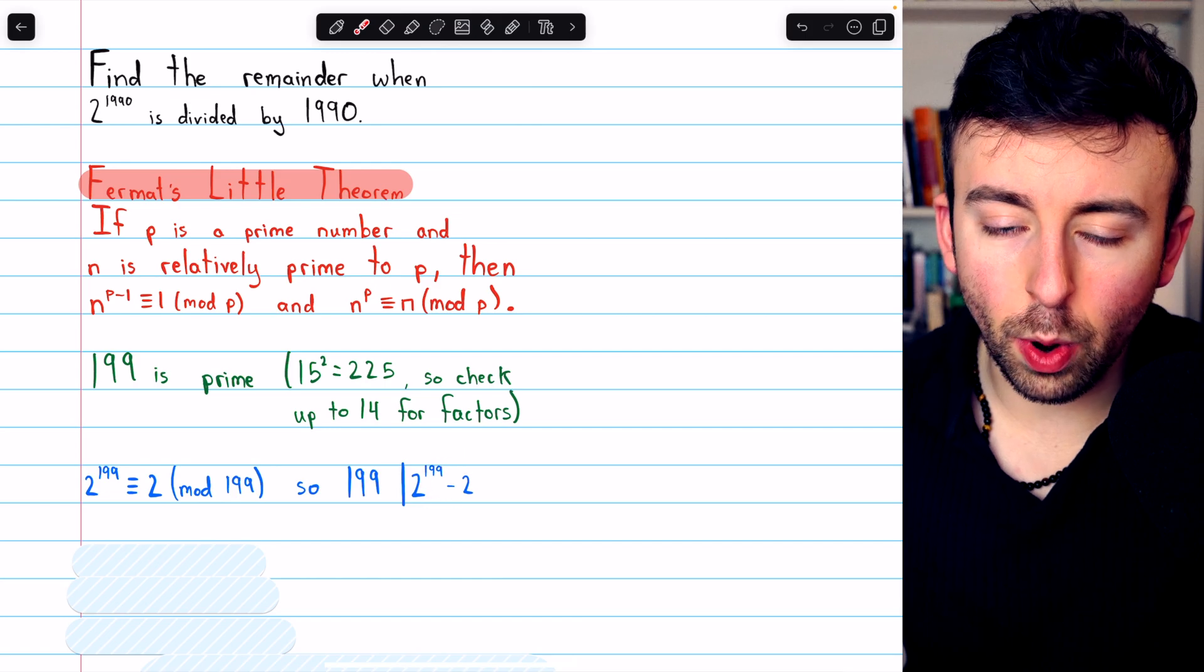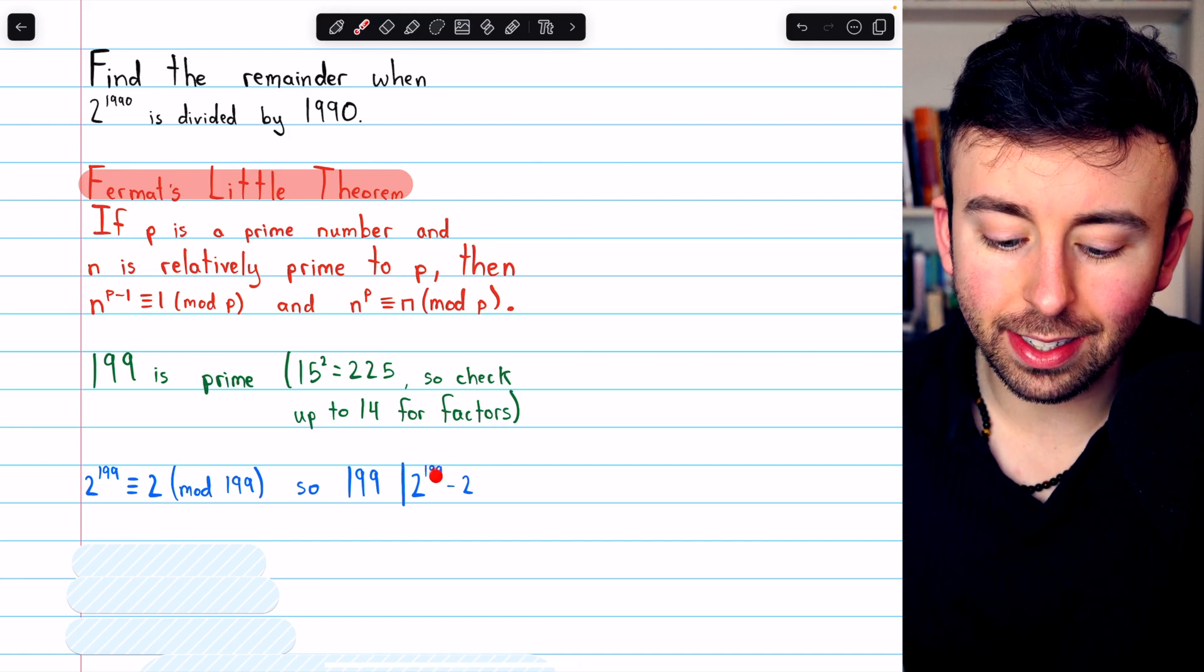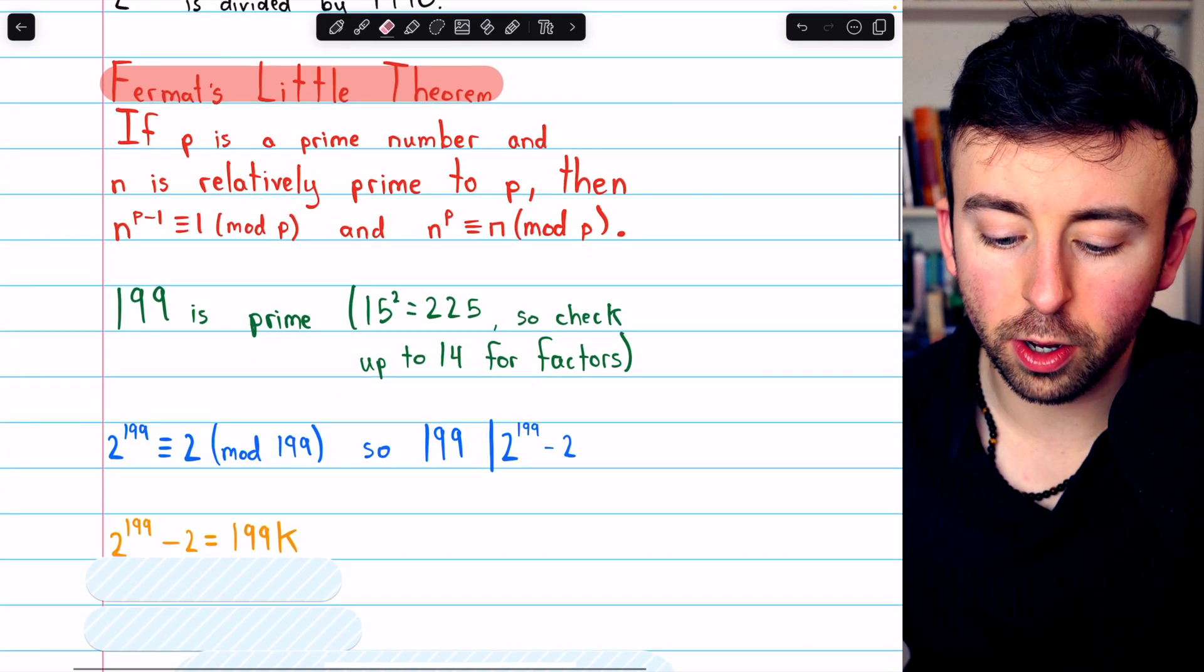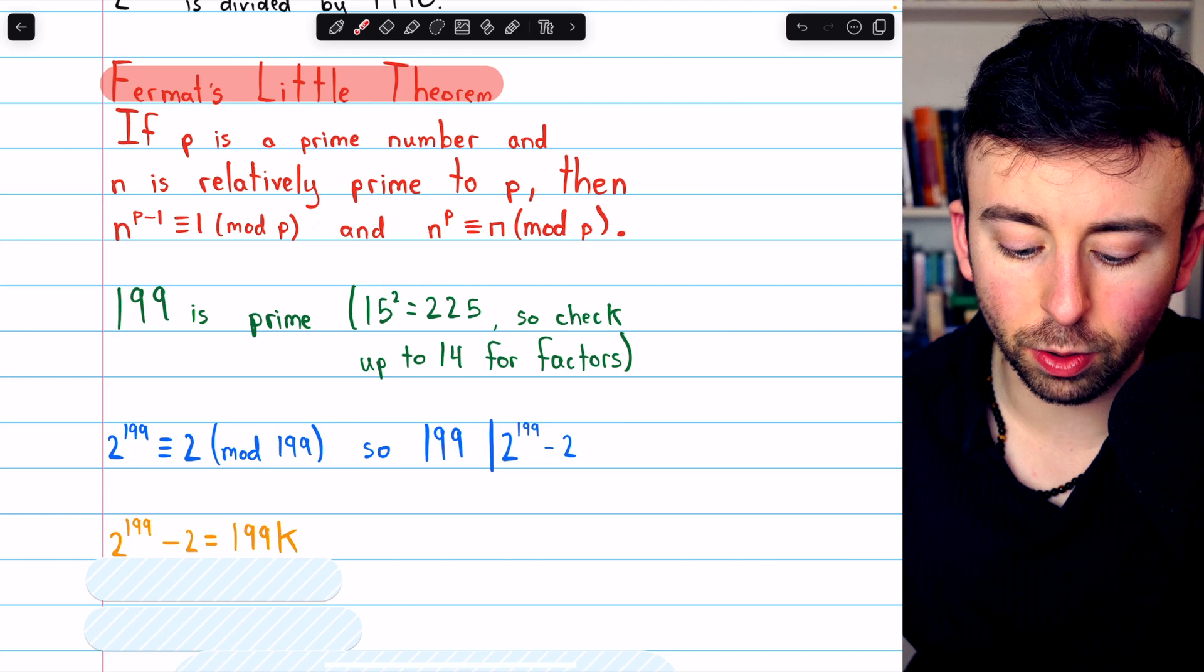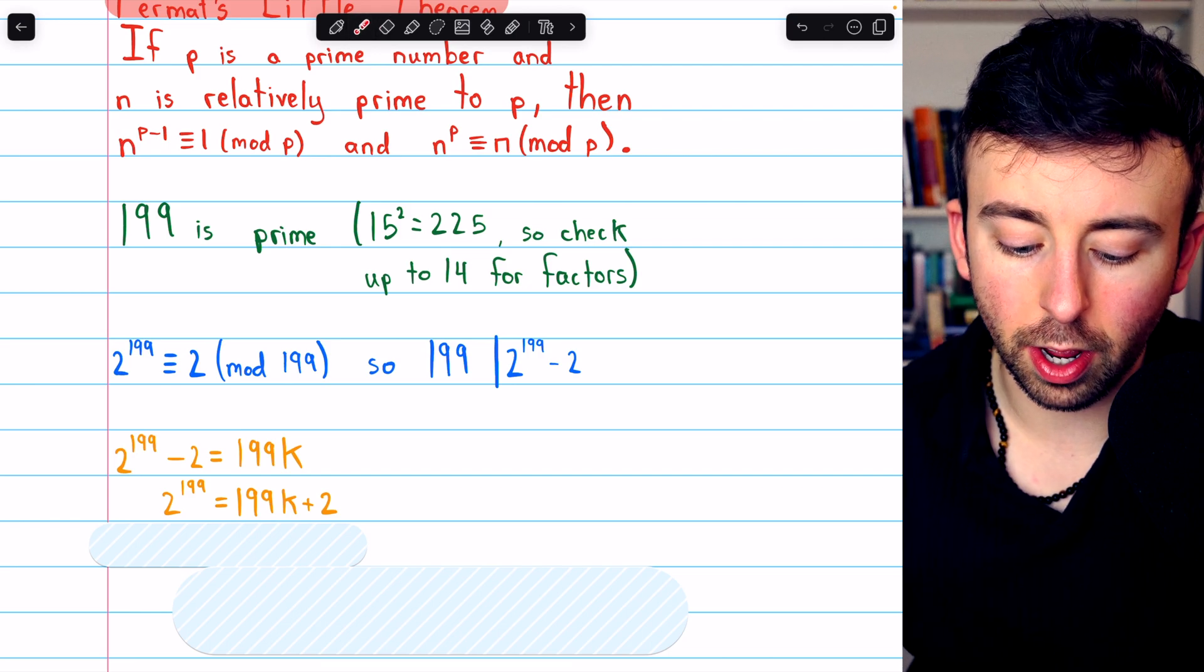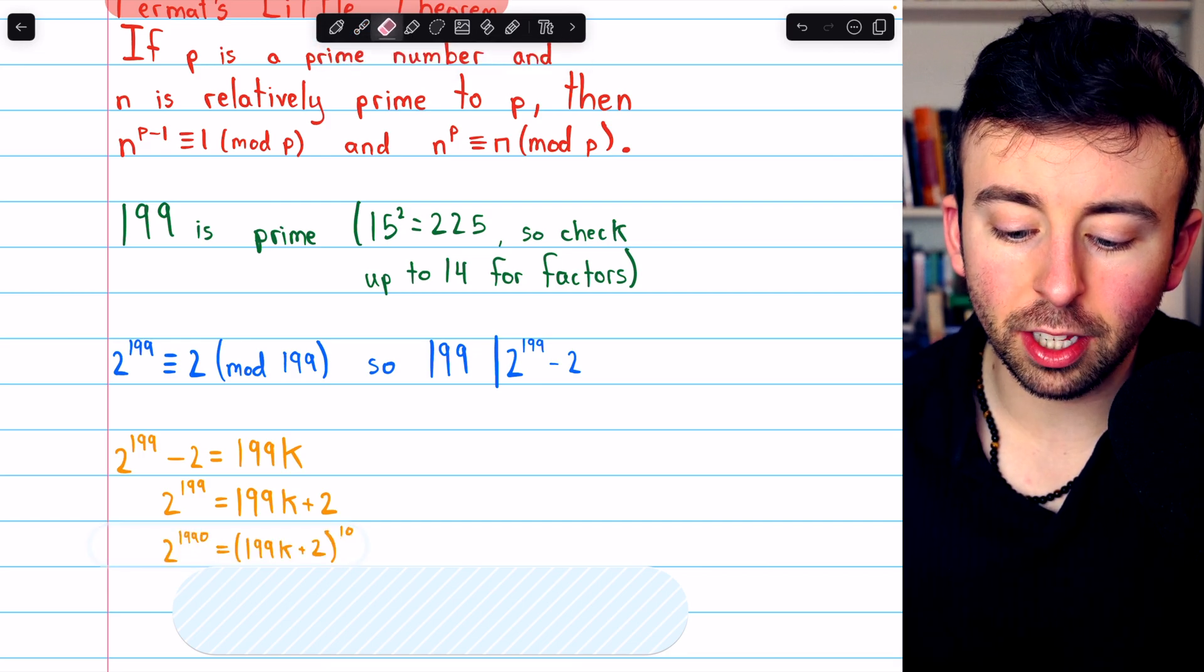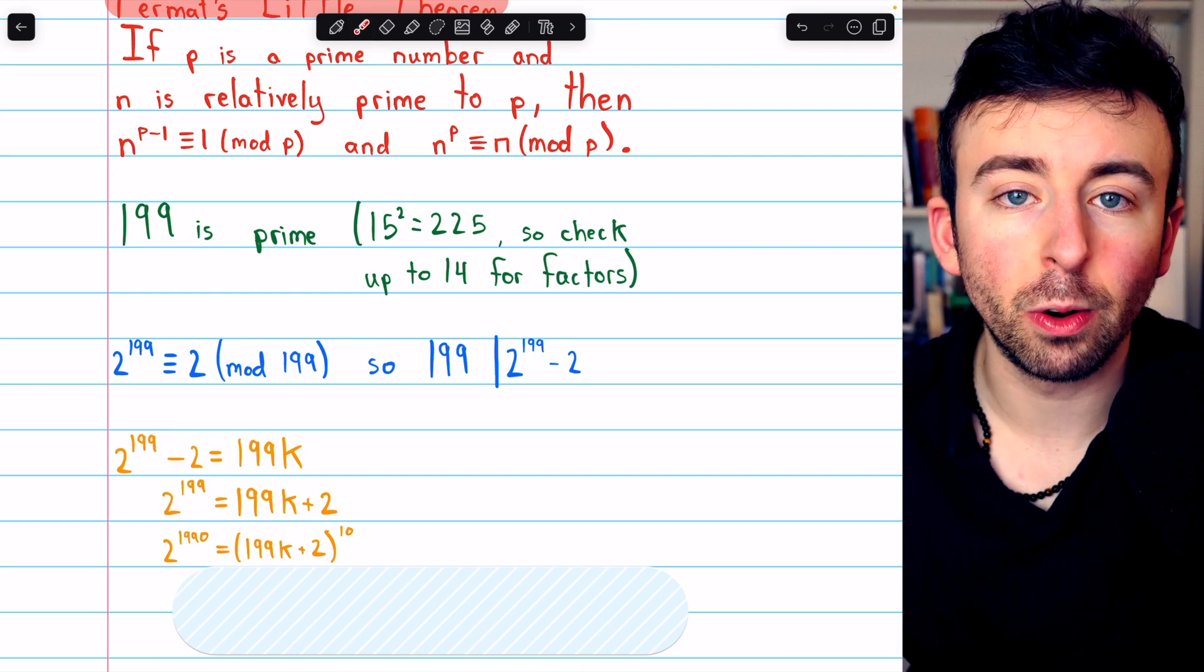From here, we can set up an equation from the definition of divisibility and then get back to the power of 1990 using the binomial theorem. So if 199 divides 2 to the 199 minus 2, by definition of divides, that means 2 to the 199 minus 2 is equal to 199 times some integer k. Thus, 2 to the 199 is equal to 199k plus 2.